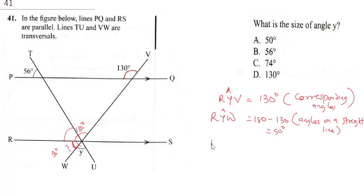Now looking at this 56 here, that's R, Y, and T is going to be 56 degree. And you're still going to call it corresponding angles because it's corresponding.